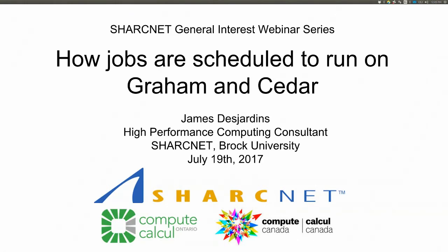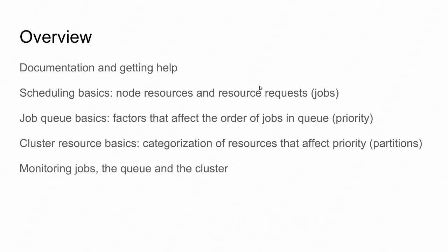There is some documentation on how to schedule jobs on these new systems, but what we really want to focus on today is how the scheduler receives resource requests in a job and then dispatches them to run on the clusters. Understanding the procedure where a queued job goes from being in the queue to being in the running state will allow you to submit jobs in ways that might reduce your queue time and give you a better understanding of system utilization.